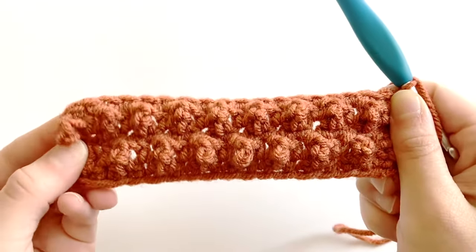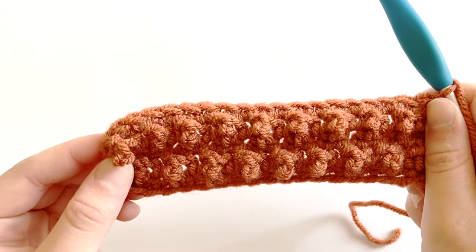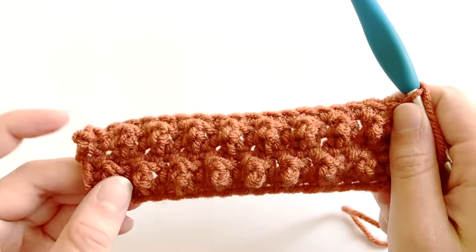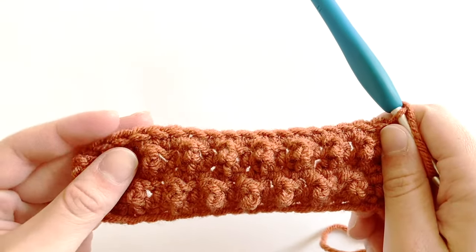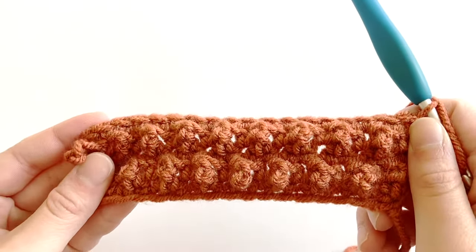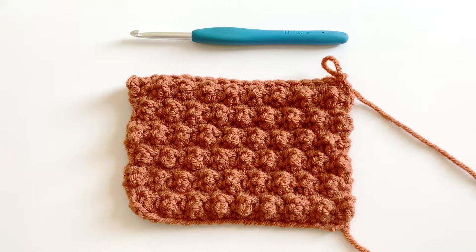Okay, and this is what it should look like after row five, and you're going to want to continue repeating rows two through five until you've reached your desired length. I just finished several more rows of the cobblestone stitch.